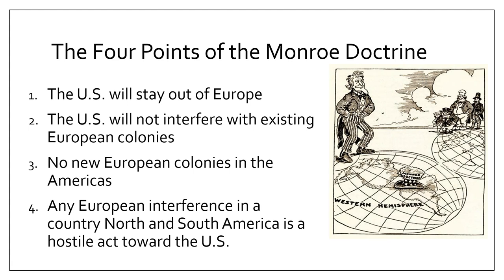In Monroe's speech, he outlined four points of what would become known as the Monroe Doctrine. Point one: the US is going to stay out of Europe and not get involved in wars or disputes between European countries focused in Europe. Point two: the US is not going to interfere with any existing European colonies inside the Americas — for example, if Canada was controlled by the British, the US would not interfere. Point three: no new European colonies can be formed in the Americas, meaning Europeans cannot expand or create anything new.